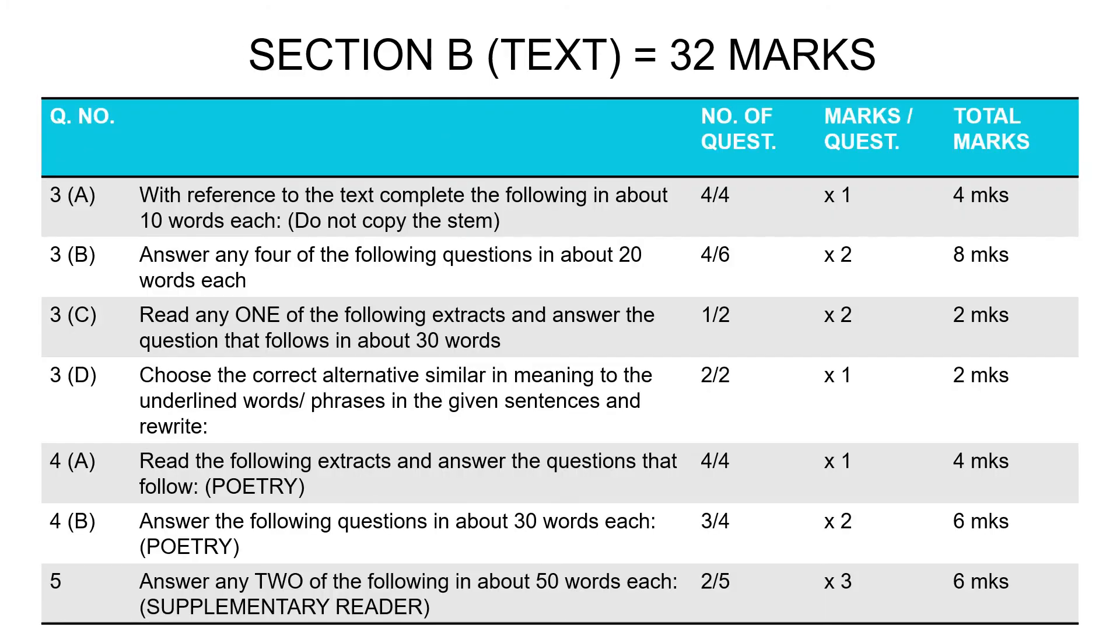These are the types of questions that are asked as part of your Section B or textual section, carrying a total of 32 marks. 3A is complete the following in about 10 words each—simple statements. You do not have to copy the stem, just complete the statement as per your text. Four questions, one mark each, gives you four. 3B is question answers in about 20 words each, which means you have to make around two points in each answer. Any four out of six gives you two marks per answer, eight in total there.